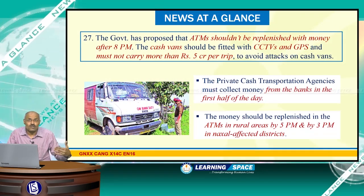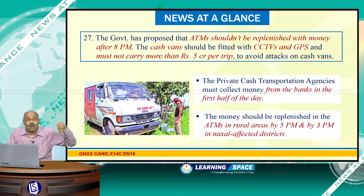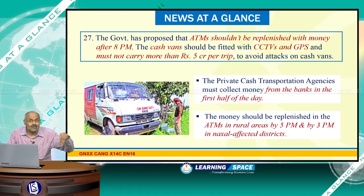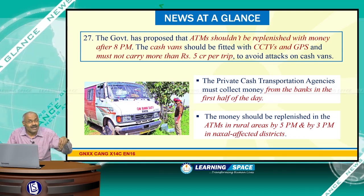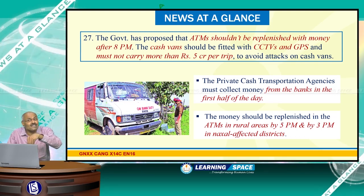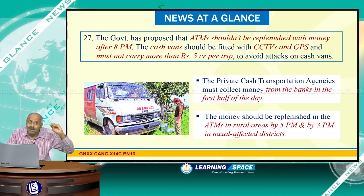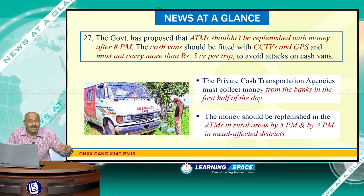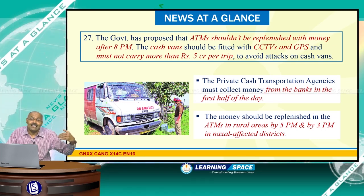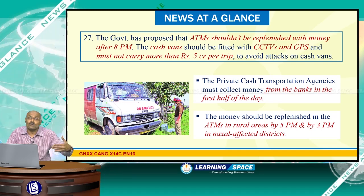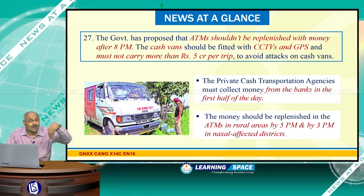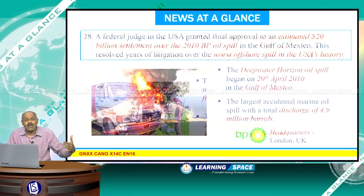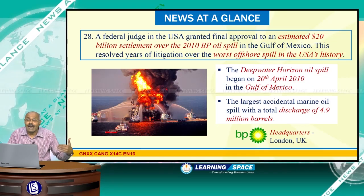The government proposed that ATMs should not be replenished with money after 8 PM. The government also proposed that cash vans should be fitted with CCTVs and GPS, and must not carry more than rupees 5 crore per trip. Attacks on cash vans have increased in recent times, so these regulations were proposed to reduce such incidents.